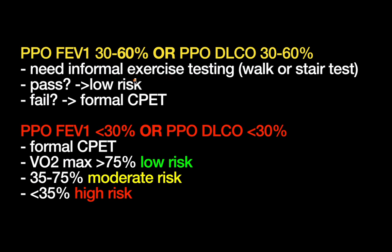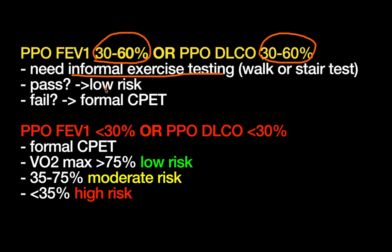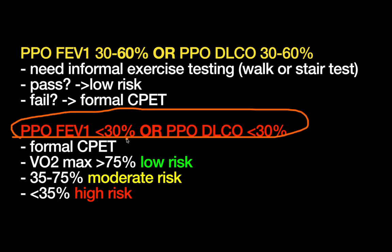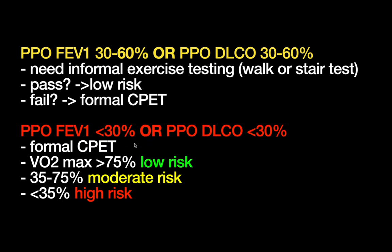If you're less than 60%, it gets a bit more complex. If you're in the middle zone between 30–60% for either the postoperative predicted FEV1 or DLCO, you need at least informal exercise testing via a walk or stair test. Your institutional criteria will determine what a pass is — if you pass, you're considered low risk and can proceed. If you fail, you'll need a formal CPET (cardiopulmonary exercise testing). If your postoperative predicted value is less than 30% for either FEV1 or DLCO, you absolutely need formal CPET, which gives you a VO2 max value: greater than 75% is low risk, 35–75% is moderate risk, and less than 35% is high risk. This informs surgical candidacy, extent of resection, or consideration of alternatives like SBRT or definitive chemoradiation.